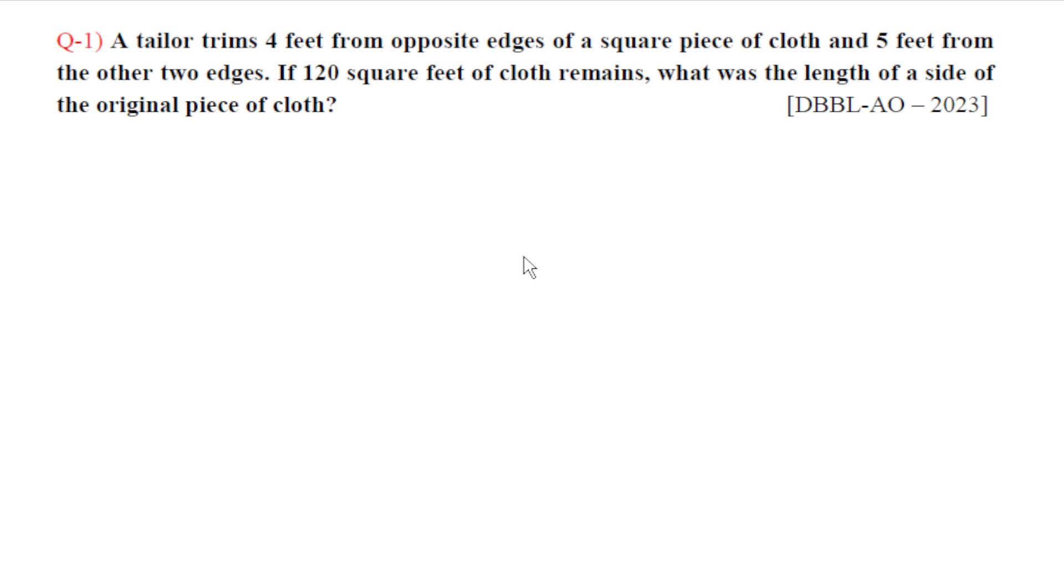A tailor trims 4 feet from opposite edges of a square piece of cloth and 5 feet from the other two edges. If 120 square feet of cloth remains, what was the length of a side of the original piece of cloth?